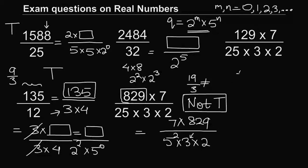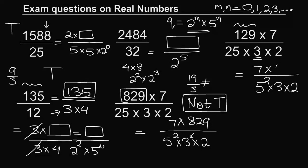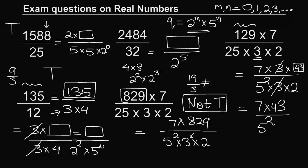For the last problem, we again have a 3 in the denominator. Let's check: applying the divisibility test, 9 plus 2 plus 1 equals 12, which is divisible by 3. So the numerator can be written as 3 times something, and the 3s cancel out. The remaining denominator is in the required form, so this decimal expansion will terminate.